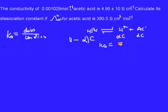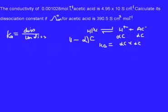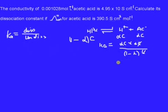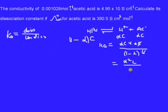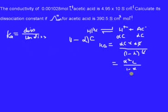So we can say that Ka equals alpha·C times alpha·C divided by (1 − alpha)·C. Canceling out C, we get alpha squared times C divided by (1 − alpha). This means the numerator represents the dissociated molecules, alpha²·C, divided by (1 − alpha).